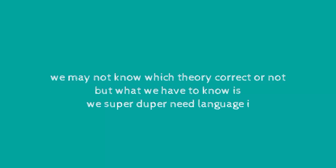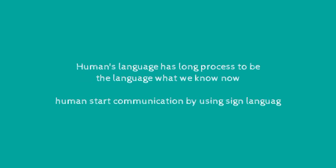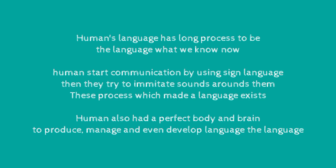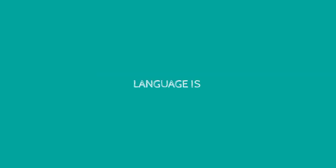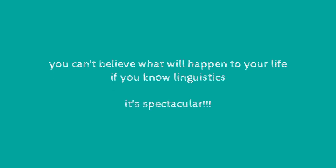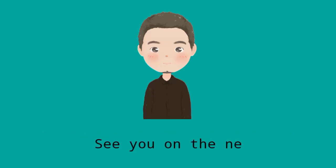We may not know which story is correct, but what we do know is that we super duper need language in our life. Conclusion: Human language went through a long process to become the language we know now. Humans started communication by using signs and tried to imitate sounds around them — this process is what made language exist. Humans also had a perfect body and brain to produce, manage, and even develop language. Let's learn many languages — it's worth it, it's cool, because language is beautiful. And let's learn linguistics! You can't believe what will happen to your life if you know linguistics — it's spectacular. Thank you so much for watching. See you in the next video. Ta-ta!